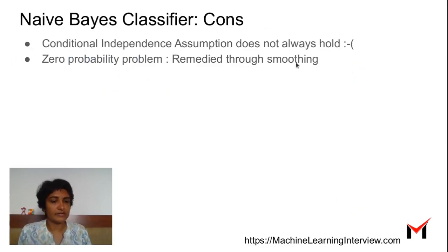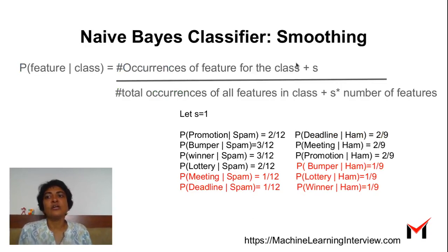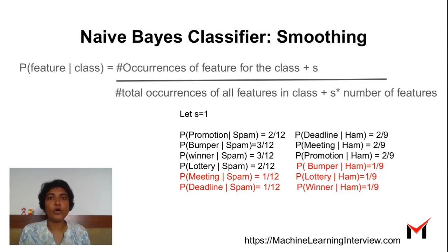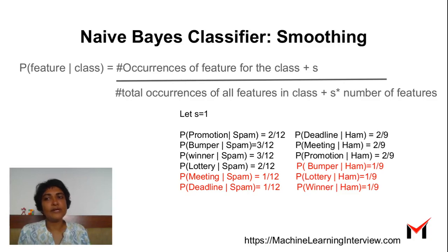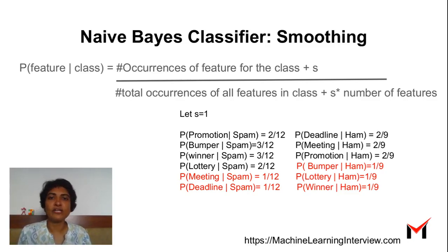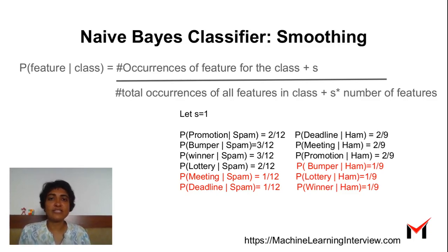This can be remedied through smoothing. The probability of a feature given the class was computed as the number of occurrences of the feature for all data points in that class, divided by the total number of occurrences of all features for that class. With a smoothing factor s, it becomes: number of occurrences of the feature for the class plus s, divided by the total number of occurrences of all features in the class plus s times the number of features.